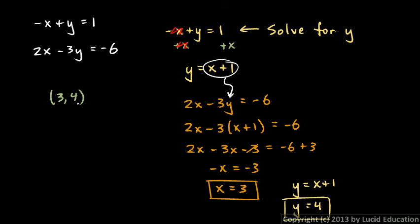3 comma 4 as an ordered pair. Either way would be okay. That's standard notation. It's understood that x is first and then y. Or you could just do that. But that's it. The system is solved now, and we solved it using the substitution method.